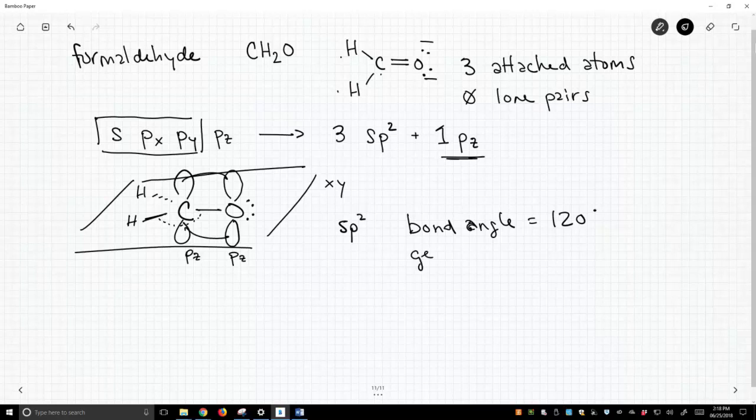And its geometry. This carbon has three groups spread around it. So it's going to be some kind of trigonal. And those three groups occupy a single plane. So it's going to be trigonal planar. So the hybridization of the central carbon in formaldehyde is sp2 hybridized, has a bond angle of 120 and a geometry of trigonal planar.